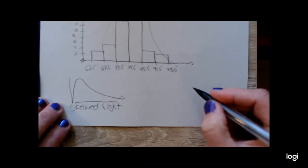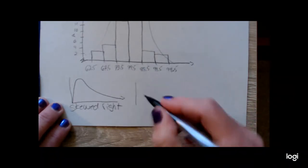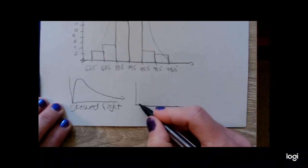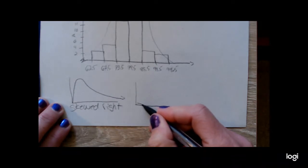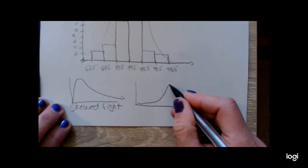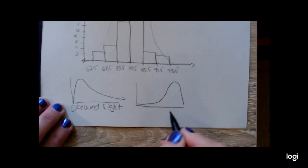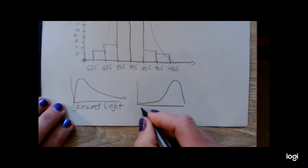On the other end, if I were to draw a histogram and I have a long tail on the left side, and then the data tends to cluster in the upper values, this would be skewed left.